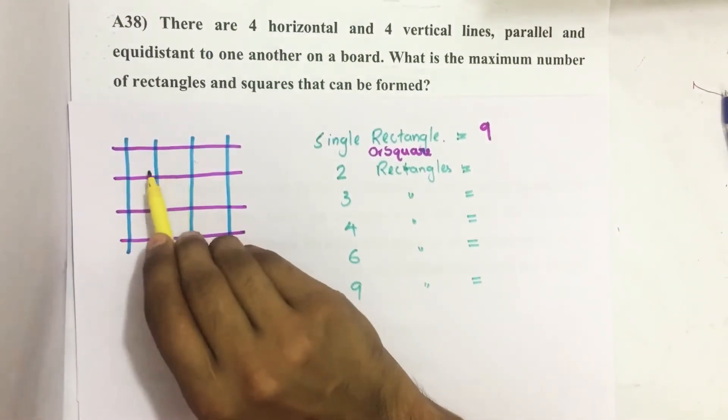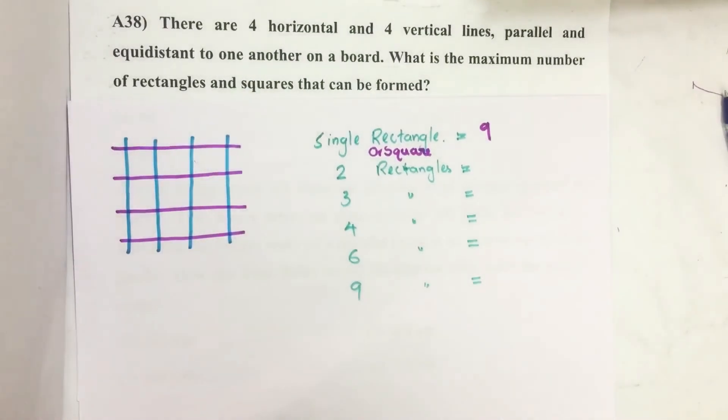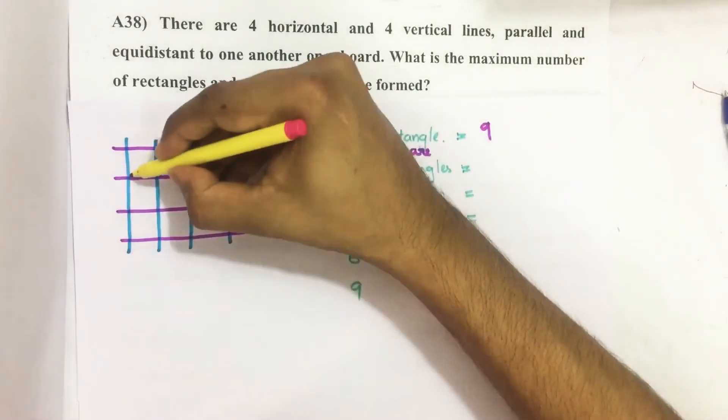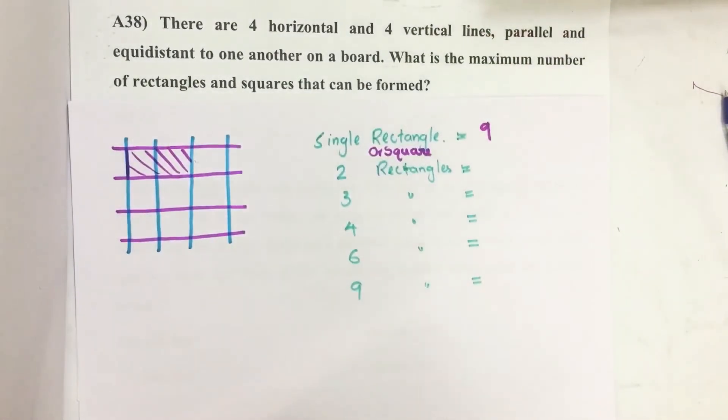Then by joining these two single squares it forms another rectangle. This is another rectangle. How many such rectangles are there by joining two squares?